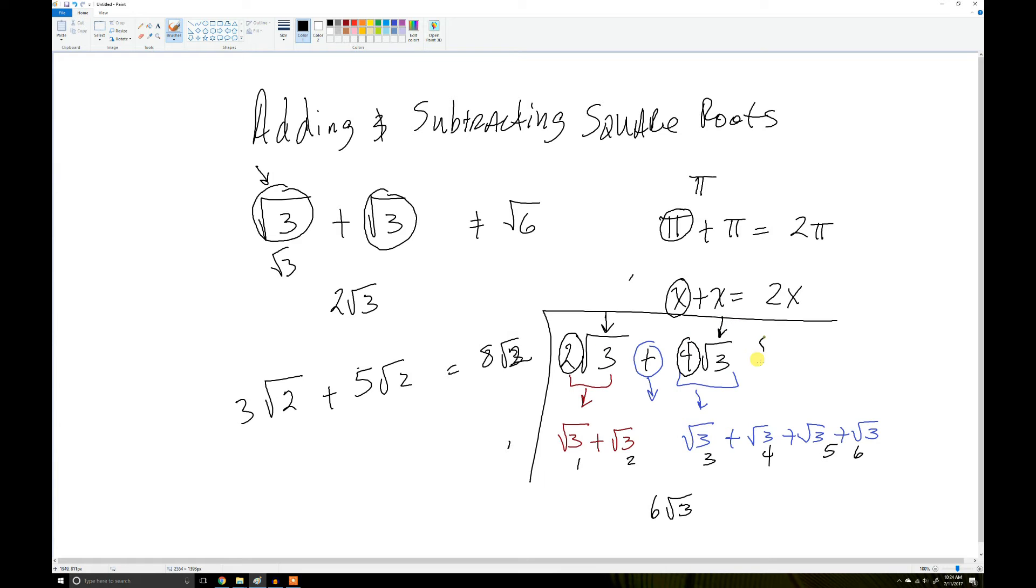However, if it would be different though, if it was like this: 3 times the square root of 8 plus 2 times the square root of 7. Because here, those are square roots of 8 and these are square roots of 7. You can't add those.